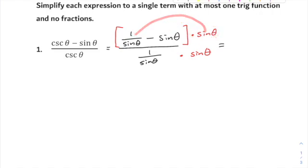Sine times 1 over sine, that's going to give you 1. Minus sine times sine, just don't forget to distribute it to the other term, that would be sine squared.